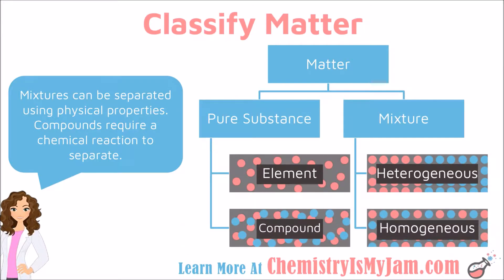On our flow chart, I have used a picture to help you visualize what is going on with an element. I have used a series of dots that are all the same color to represent the fact that all of those atoms are the same. In order for an element to be a pure substance, everything about it is going to be the same — so each of these atoms is the same.